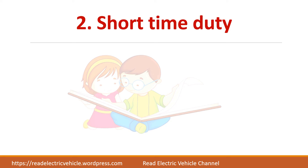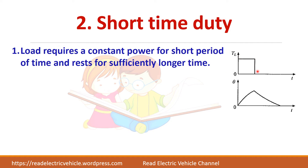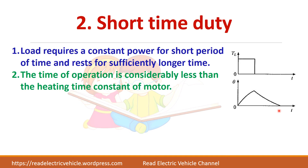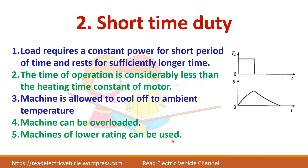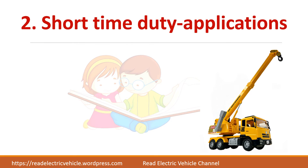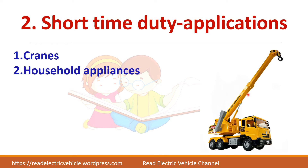Next is short time duty. Here, the load will be available only for a short time and after that, the motor will go to rest position. In that case, the temperature increases and there is sufficient time to cool down. The machine is allowed to cool to ambient temperature. So in this case, you can overload the machine because you are getting sufficient time to cool down. The machine can be easily overloaded, and a machine of lower rating can be used for such applications. The best example is cranes, as they are used only for a particular period, not at all times. Household appliances also come under short time duty.